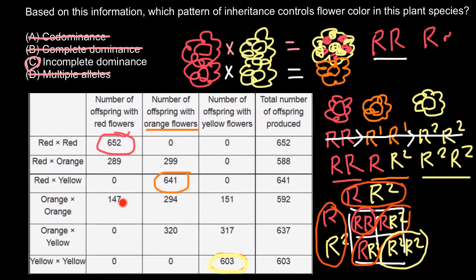What we see in the table confirms this: the orange count is about twice as much as red, and yellow also makes one quarter. This matches our predicted 1 red : 2 orange : 1 yellow ratio from the cross of two orange-flowered plants.